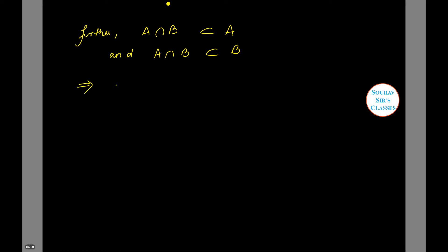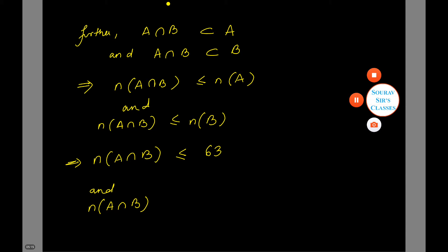This implies that n(A∩B) is less than or equal to the set A itself. And A∩B similarly is less than or equal to the set B. This means that n(A∩B) must be less than n(A), which is nothing but 63. And n(A∩B) must also be less than or equal to 76, which is n(B).